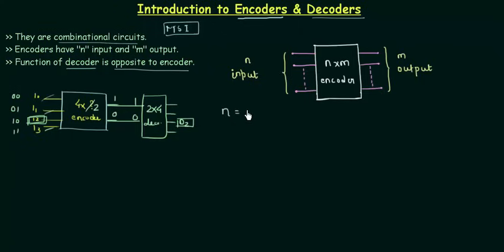If N is 4, that was your input, I can write N as 2 to the power 2, where M is 2. This is your M, M is 2, so I can write N is equal to 2 to the power M. This is the relation between the number of inputs and the number of outputs in your encoders.